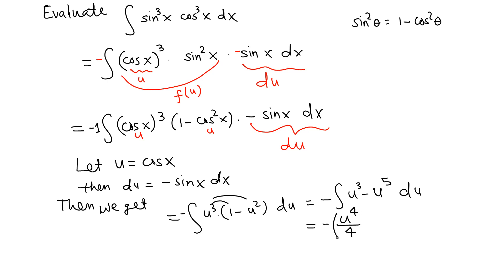Negative outside, integration means u to the n plus 1, so u to the 4 over 4, and we have to distribute this negative in a moment, so minus u to the 6 over 6, plus C.